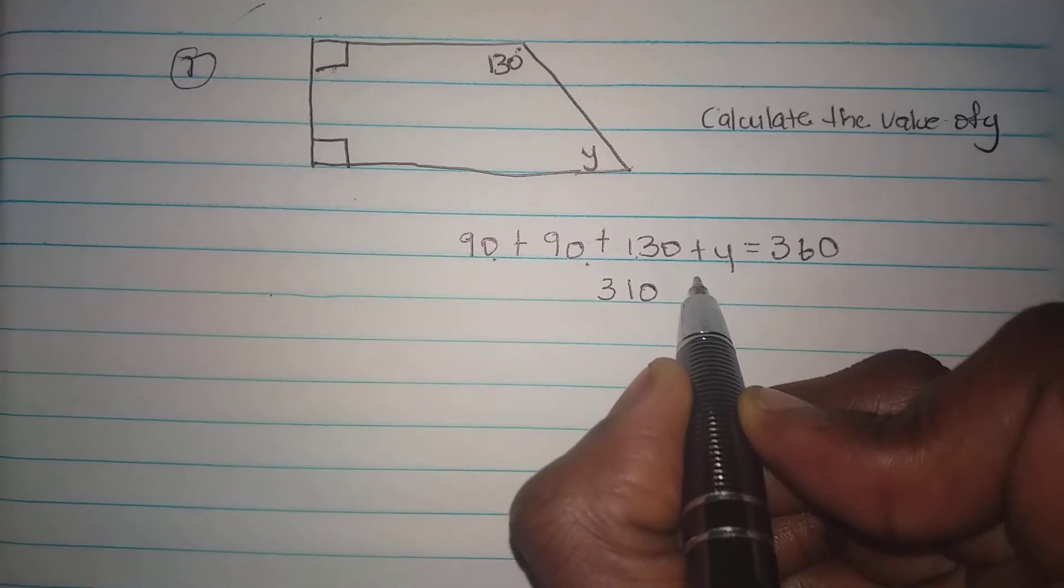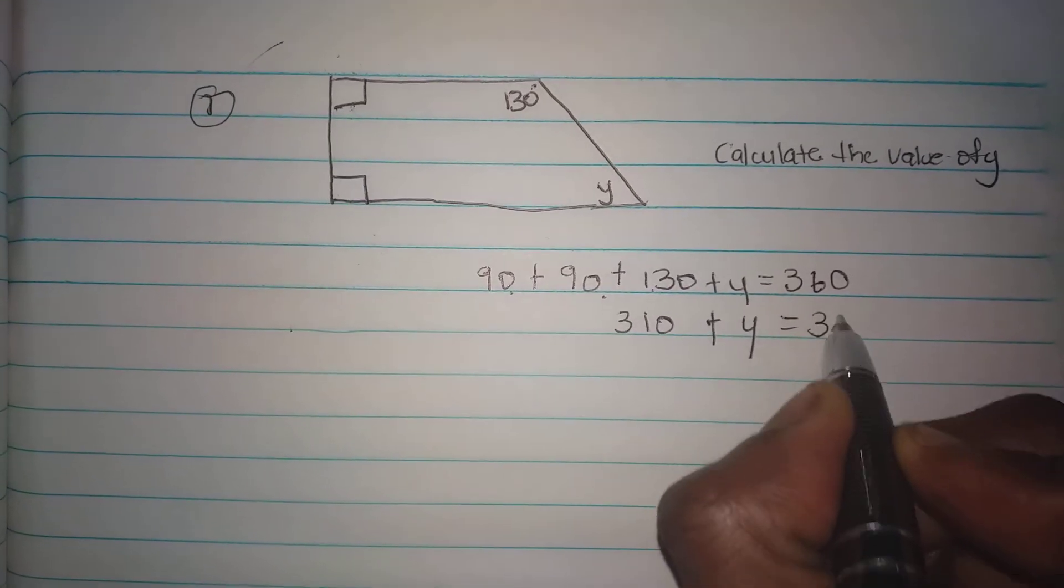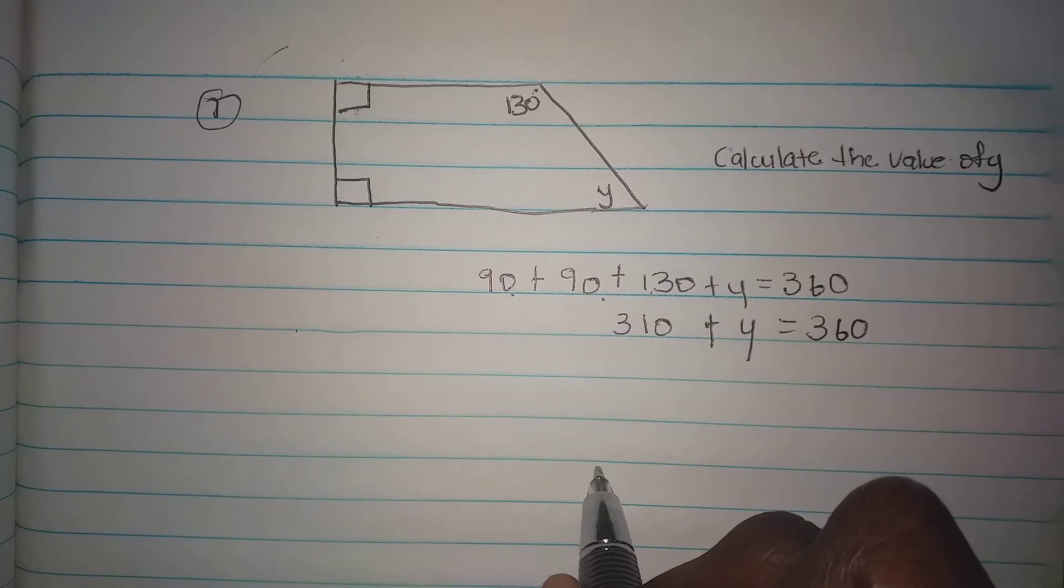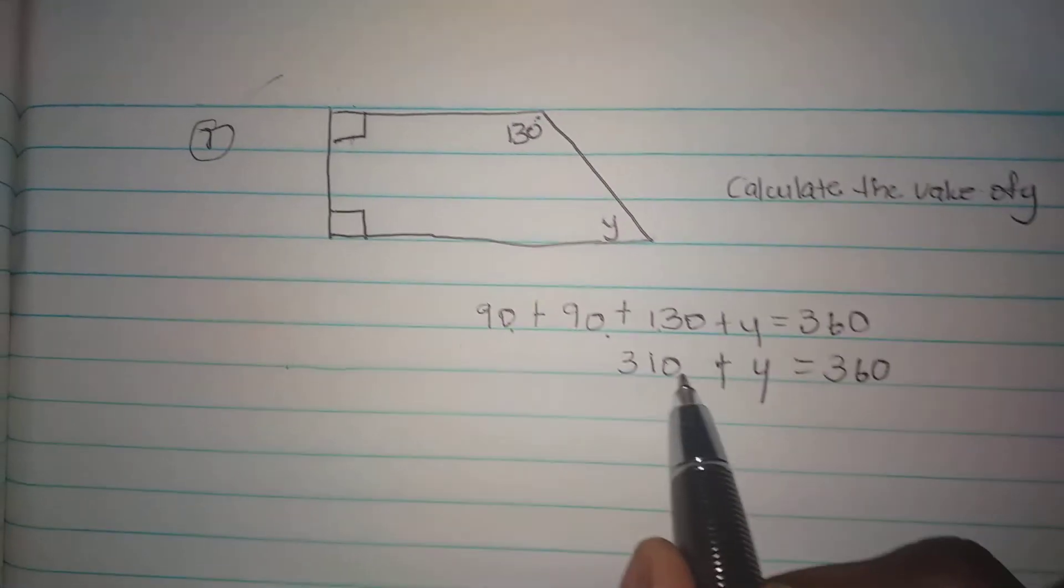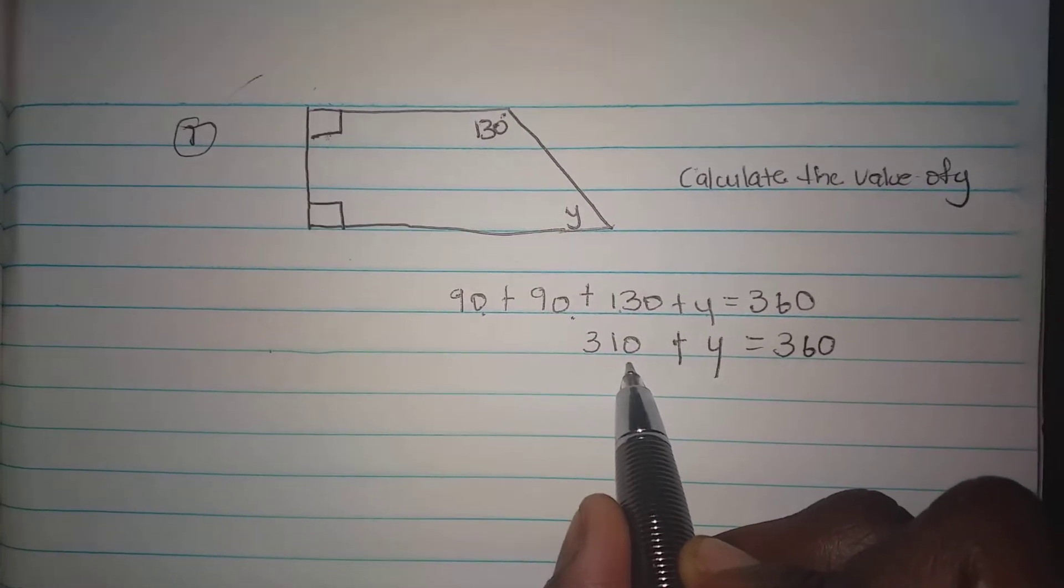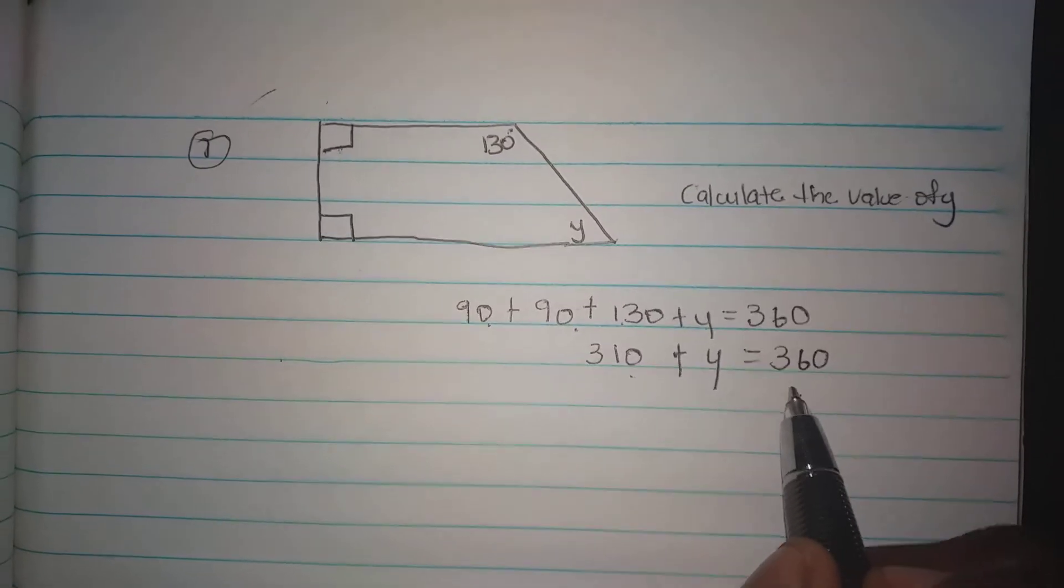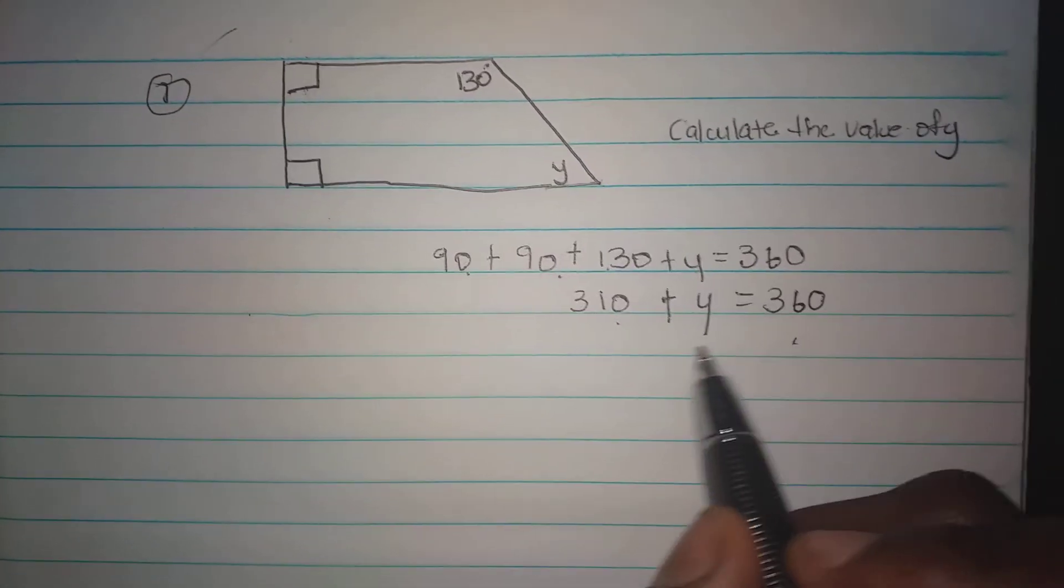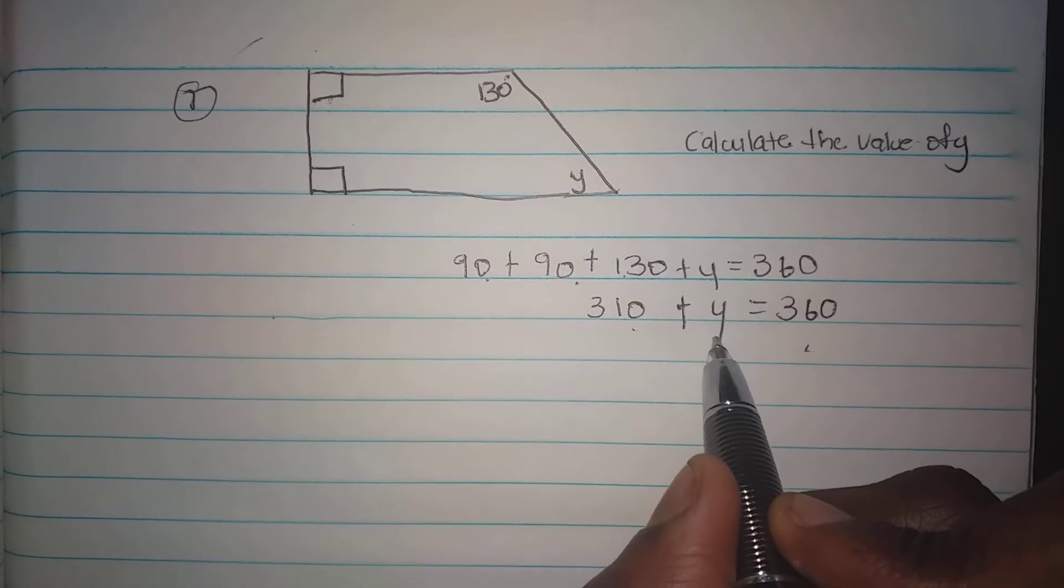So 310 plus y is equal to 360. You're asked to find the value of y. You can ask yourself what can I add to 310 to give me 360. Of course, you already see the answer, but in an equation we're asked to get the subject, which is the y, by itself on one side.